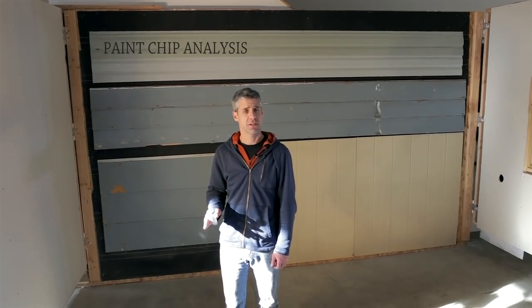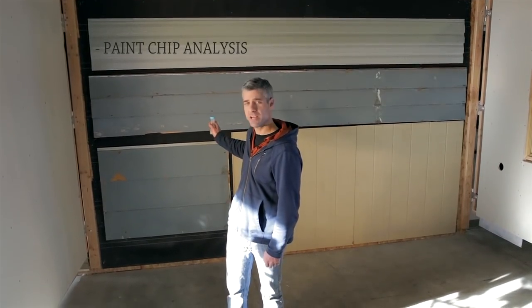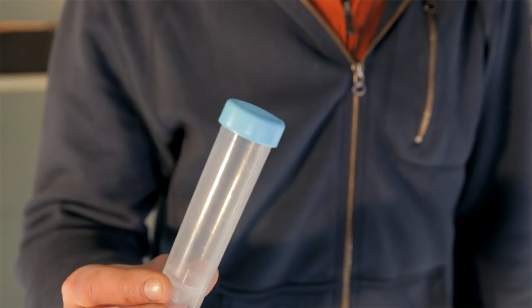A third option to test for lead is to cut out a paint chip sample and send it off to a laboratory for analysis. The process is fairly lab specific, so you'll need to already have a relationship with an NLLAP accredited laboratory prior to beginning the process. They'll provide you with the proper forms, containers, and instructions for collection and shipping.